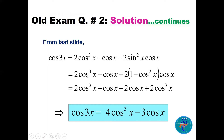Substituting: minus 2·(1)·cos(x) and minus 2·(−1)·cos³(x) gives plus 2cos³(x). Combining like terms, the final answer is 4cos³(x) − 3cos(x).